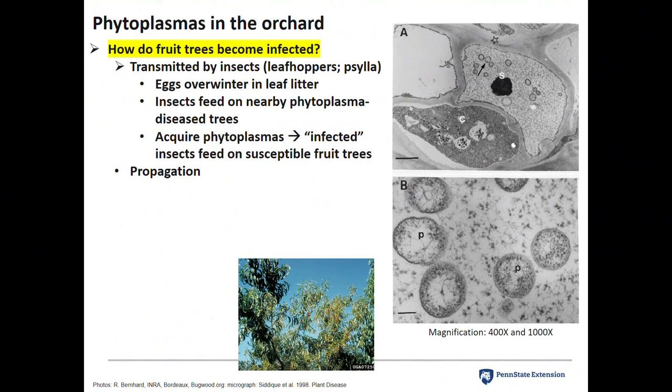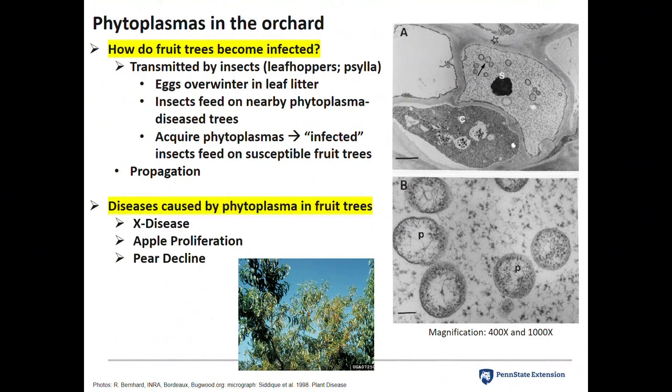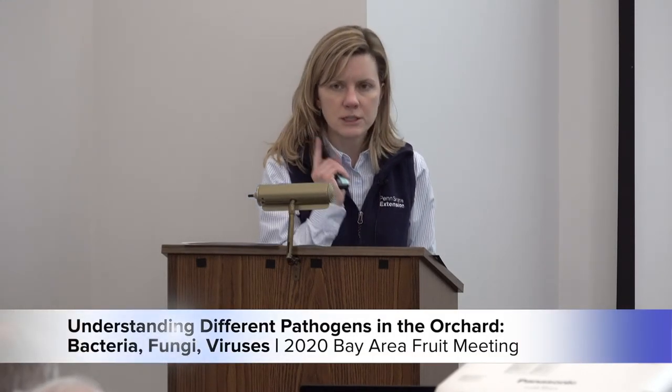The diseases caused by phytoplasmas we're most concerned about: first, X disease, which is quite common in our area. Apple proliferation phytoplasma is something to significantly worry about — it's up there with plum pox virus. A few years ago there was a threat of this in Canada; they did some tests that came back positive, but it turned out to be a false positive — we dodged a bullet. Pennsylvania Department of Ag routinely screens for this in their stone fruit nursery stocks. And pear decline, more problematic out west, is also caused by a phytoplasma transmitted by an insect.